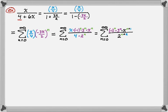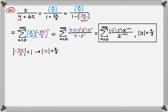I have to worry about the interval, so I know that the absolute value of r needs to be less than 1. The absolute value of negative 3x over 2 is less than 1, means that the absolute value of x is less than 2 thirds.